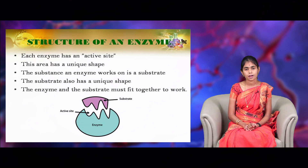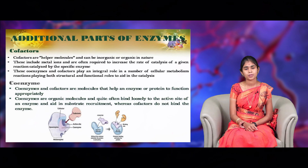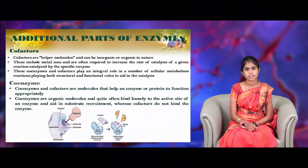Enzymes have a specific site called the active site where the substrates can bind. Substrates are the molecules that the enzyme can act on, and the substrate has a unique shape which fits with the enzyme for enzyme activity. Co-factors are helper molecules that can be either non-protein compounds or metallic ions which influence enzyme activity. If the co-factor is removed from an enzyme, it is called a holoenzyme. Apart from this, there is a molecule called apoenzyme which has no catalytic activity, and from the co-factor this apoenzyme can be removed easily once it loses its catalytic activity.